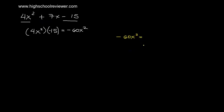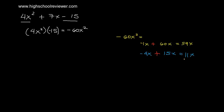Let's try negative x and positive 60x — the larger factor is positive because our middle term is positive. Negative x plus 60x gives positive 59x, which is not equal to positive 7x. How about negative 4x and positive 15x? Negative 4x plus 15x gives positive 11x, which is also not equal to positive 7x.